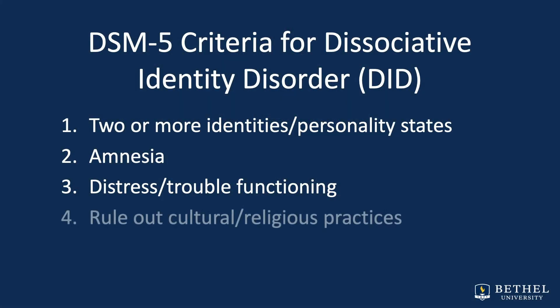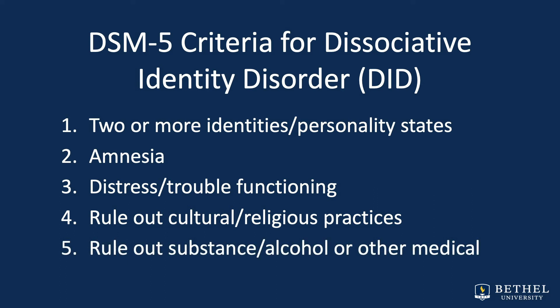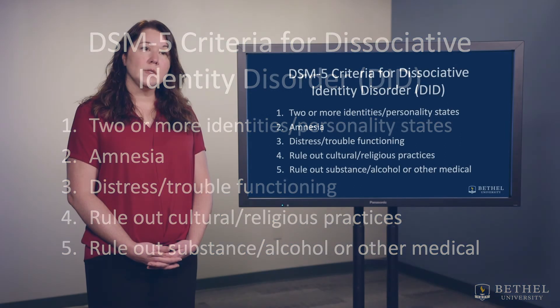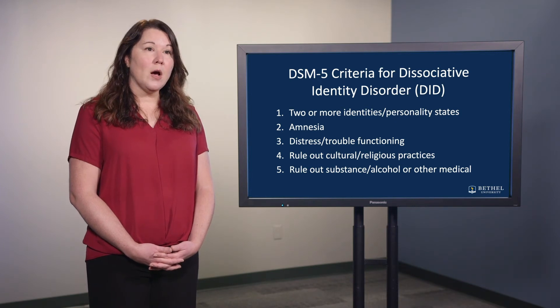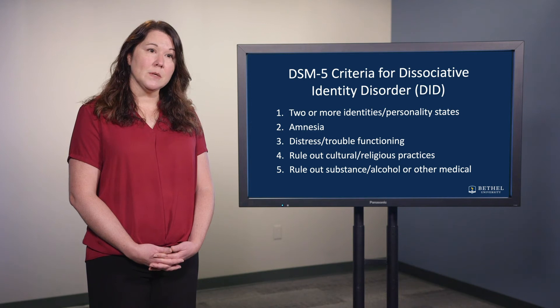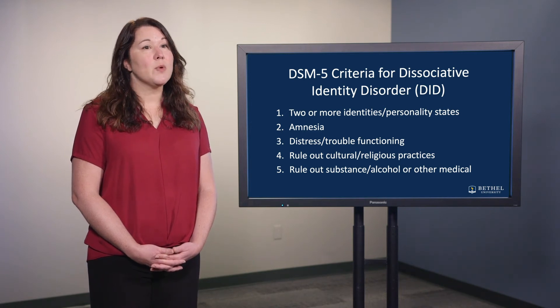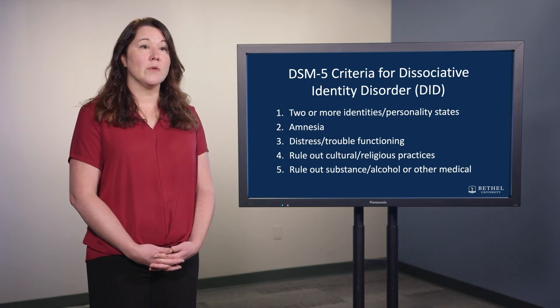Please also note we must rule out normal cultural or religious practices. One typical example that is brought up is the idea of children having an imaginary friend. We must also rule out the possibility of symptoms being due to the direct physiological effects of a substance or other medical issue. For example, we could see similar symptoms to Dissociative Identity Disorder in an individual having a blackout during alcohol intoxication. So for an accurate diagnosis, we would rule out other medical conditions, alcohol and other substance use, and cultural or religious practices that would make the behavior considered normal for the individual.